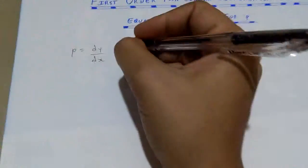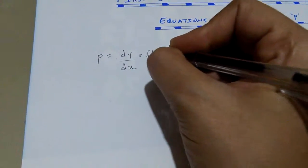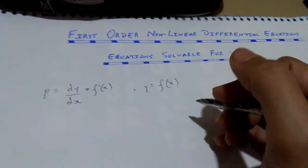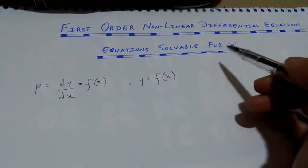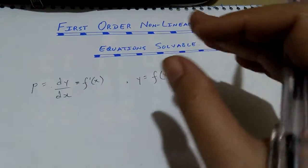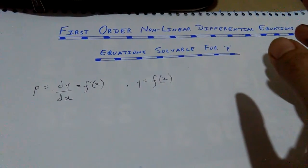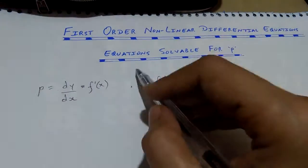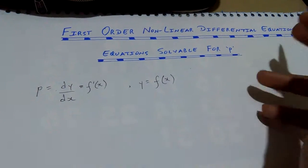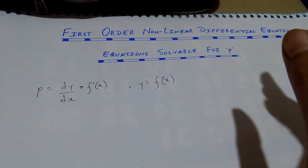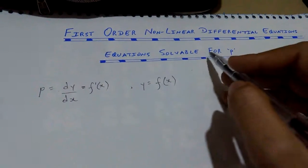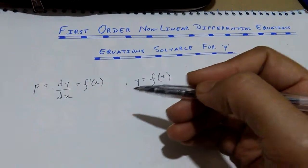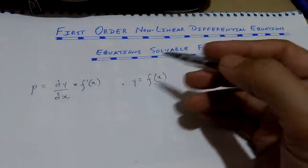In other words, P represents the first order derivative dy/dx. The question is: when do we use the method of P? If you are having a nonlinear first order differential equation and you are able to perform factorization, then you are going to adopt this method. Equations that can easily be factorized can be solved through the method of P. In this video, we are going to pick up an example and try to solve it through the method of P.